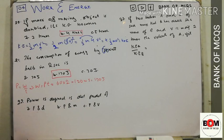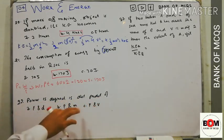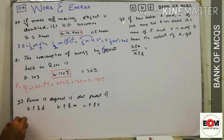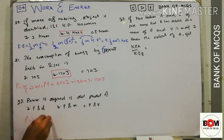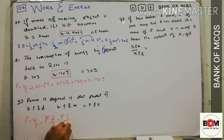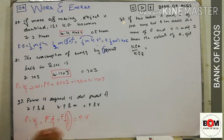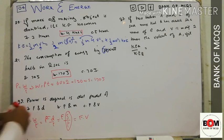MCQ 22: power is defined as the dot product of F and v. From P = W/t and W = F·d, we get P = F·d/t = F·v. So power equals the dot product of force F and velocity v.